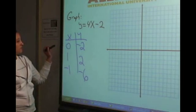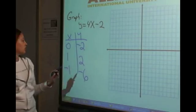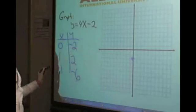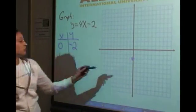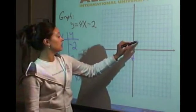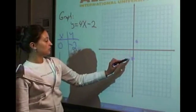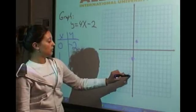So now we have enough points to graph on our lines. So if we do 0 and negative 2, that's going to be here. If we have 1 and 2, that's going to make it here. And if we have negative 1 and negative 6, that puts us here.